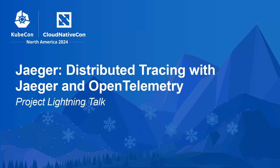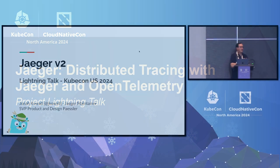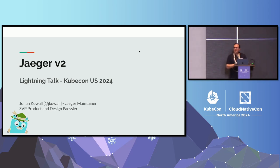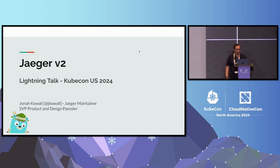Hello everyone. I'm here to talk to you today about Jaeger and we have a big new release, version 2, that I'll touch upon and explain the significance of. Jaeger is a graduated CNCF project focused on observability. We do distributed tracing. It was donated by Uber to the CNCF and was one of the first graduated projects.